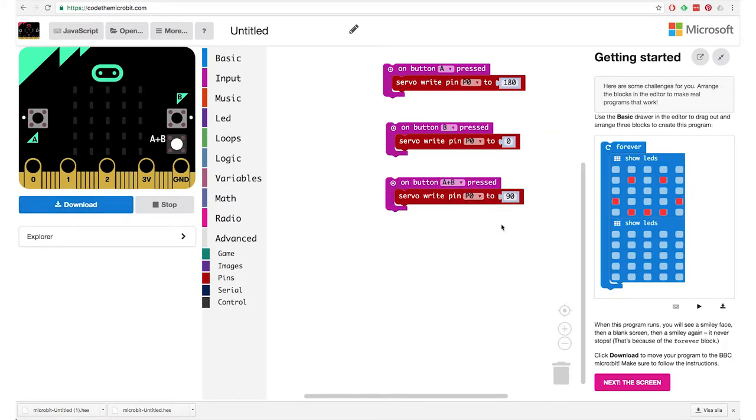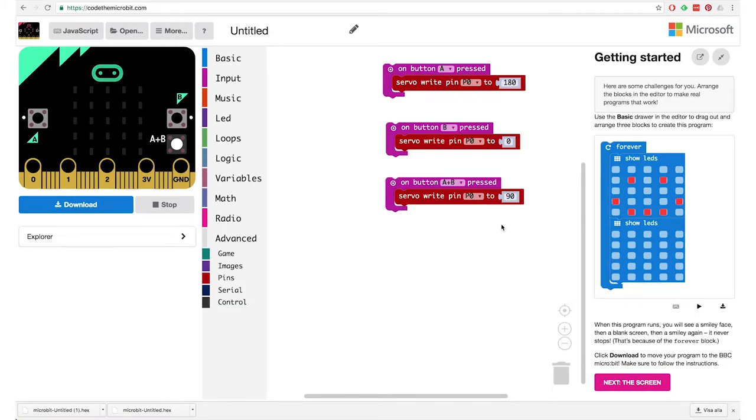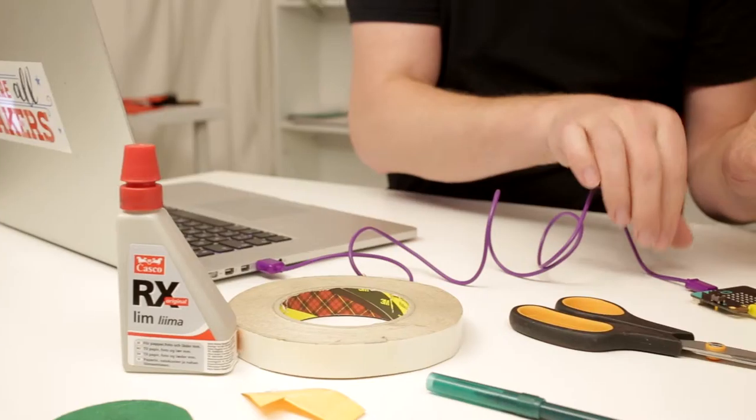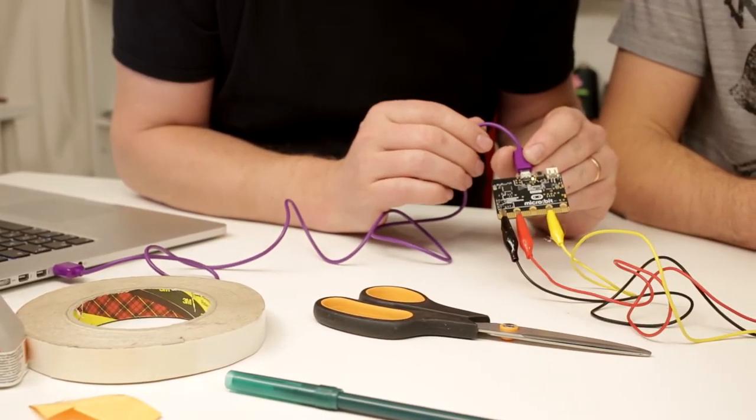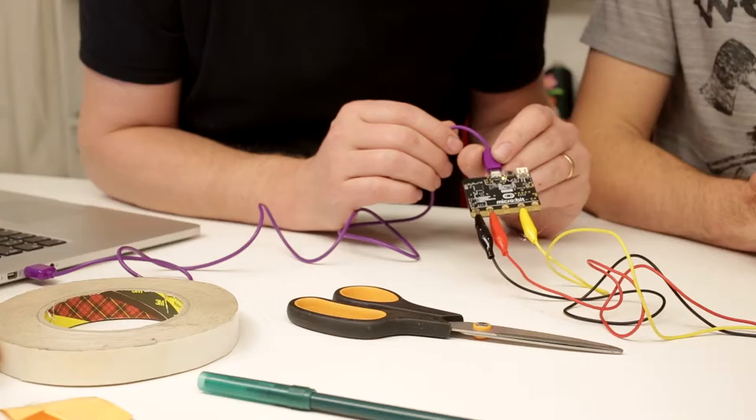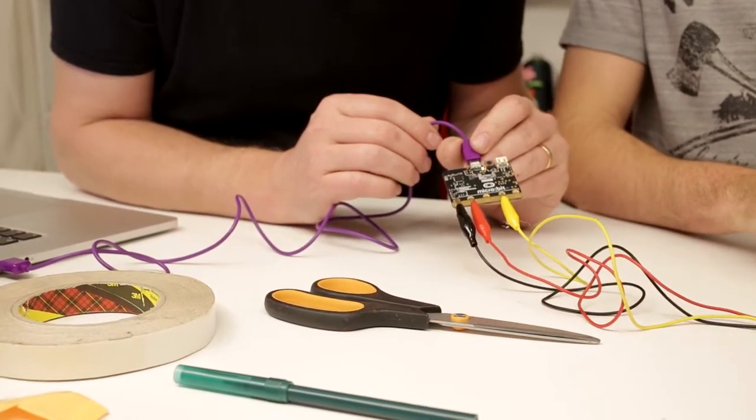Then we have A and B together. I'll duplicate it again and we'll do 90 degrees for in between. A and B button together. Then I'll transfer the code. I'll go to download, open it in the finder, take the code, and drag it to the micro:bit. We should see the LED blink to upload, and when it's done we should be ready.